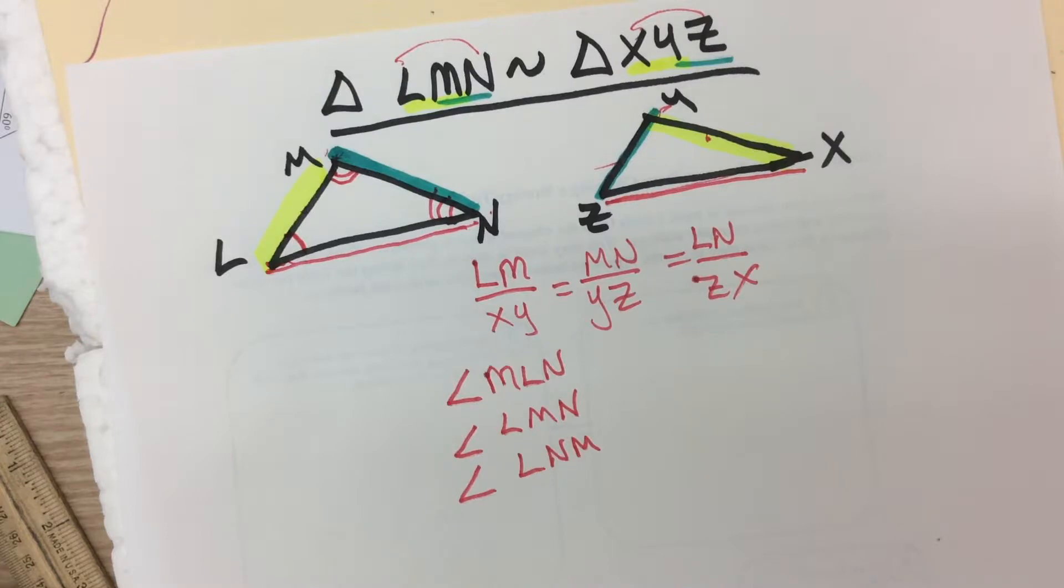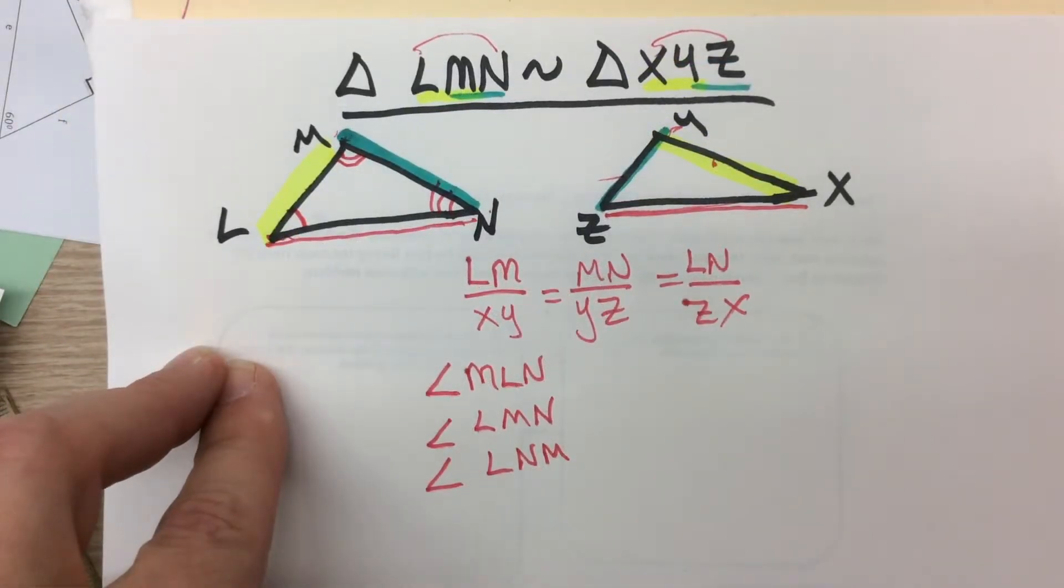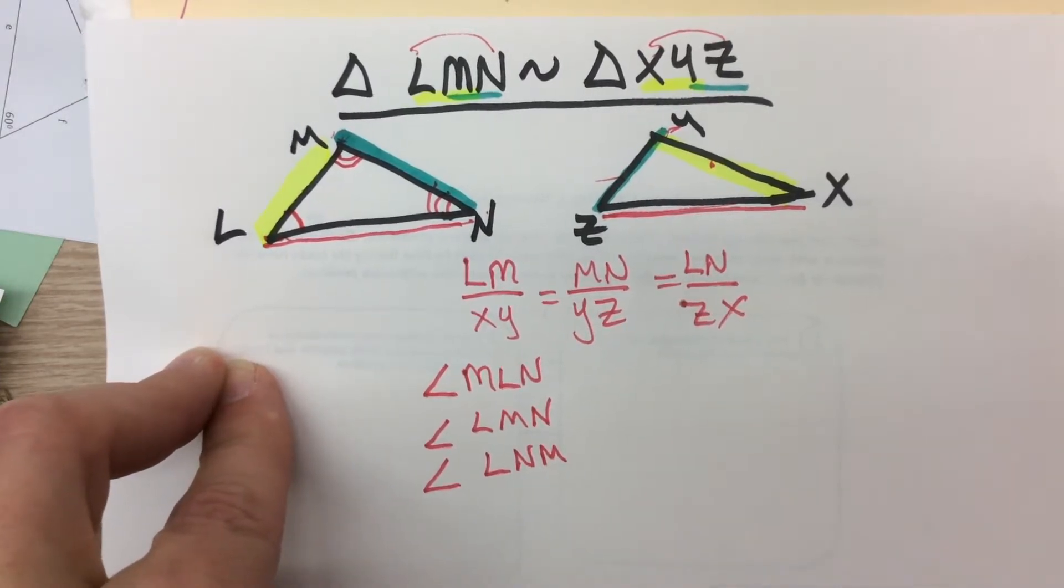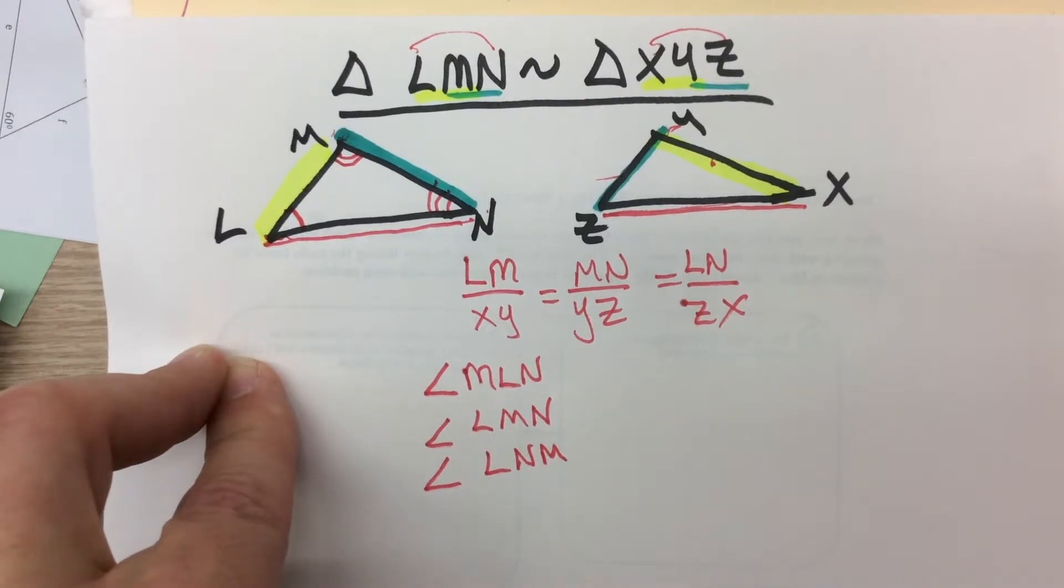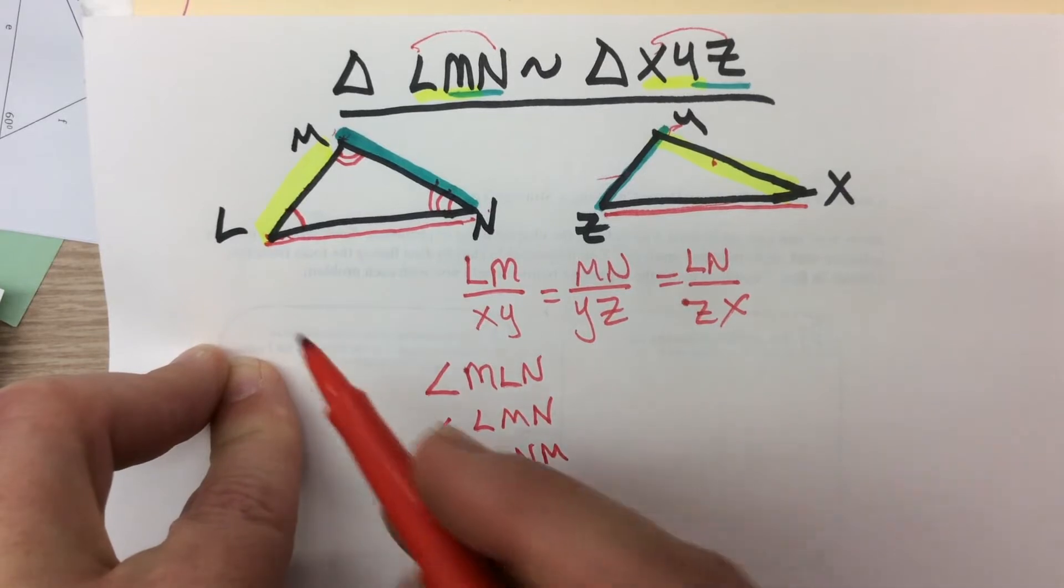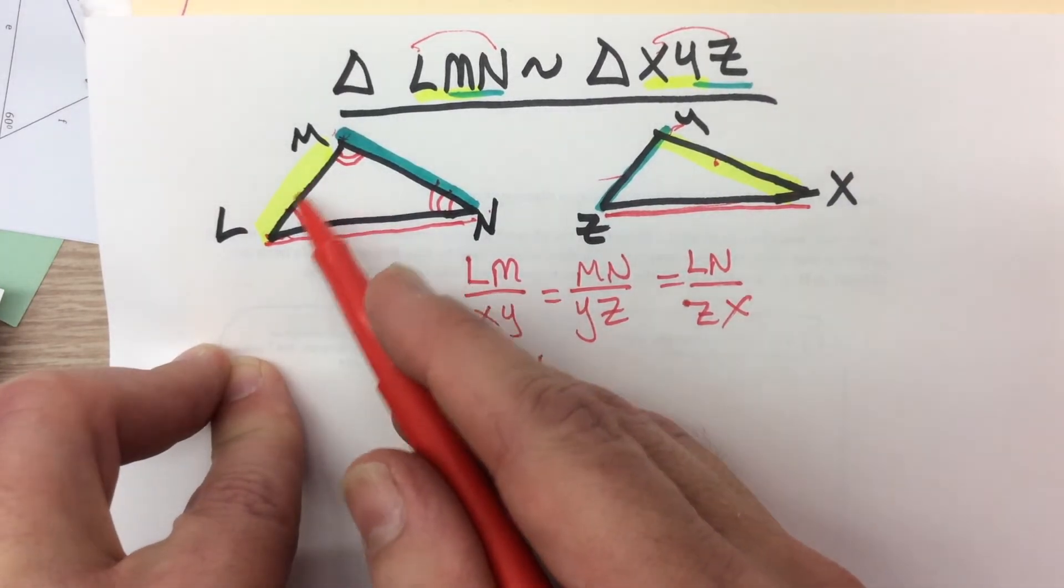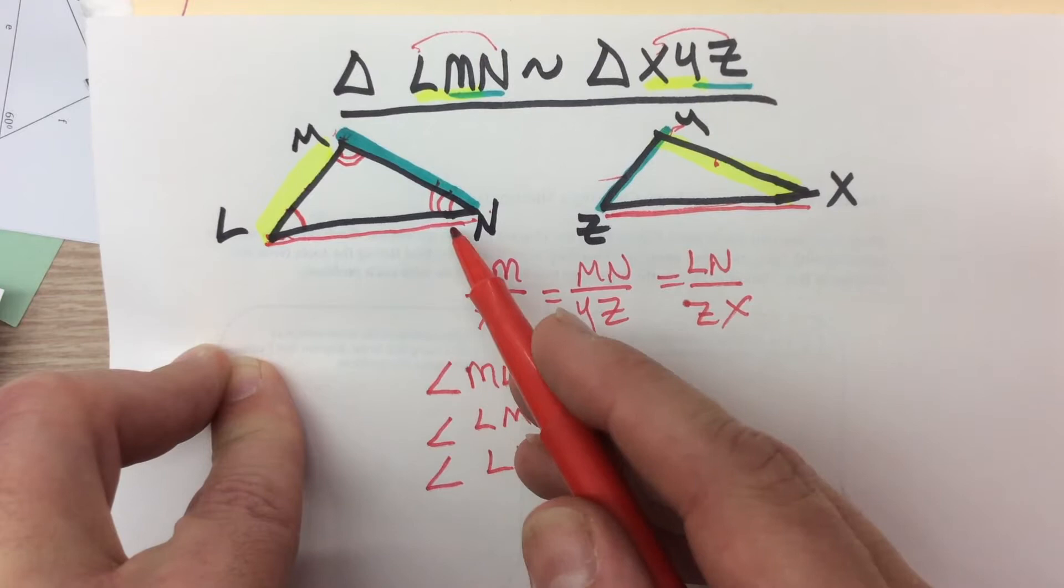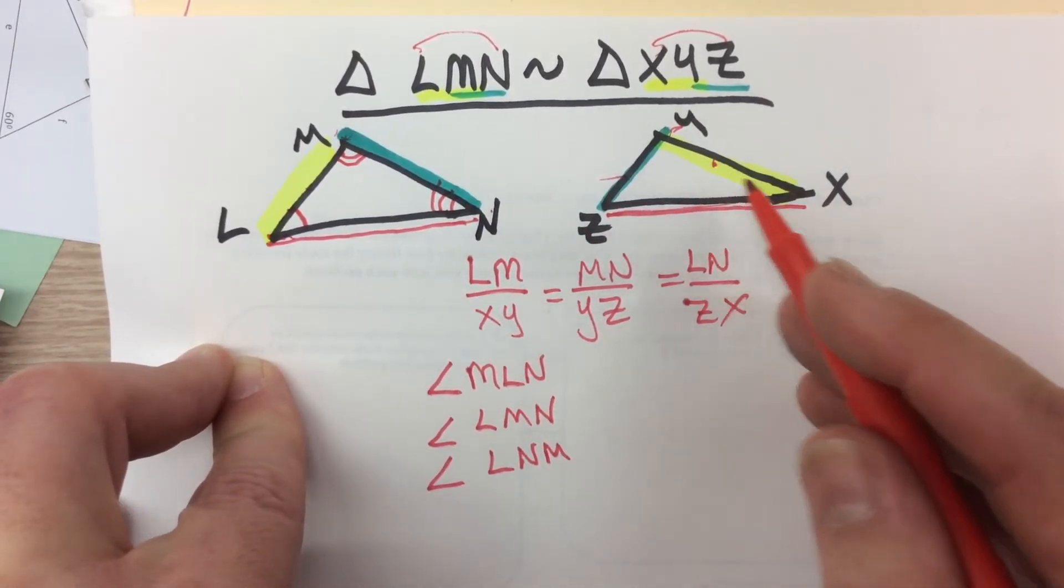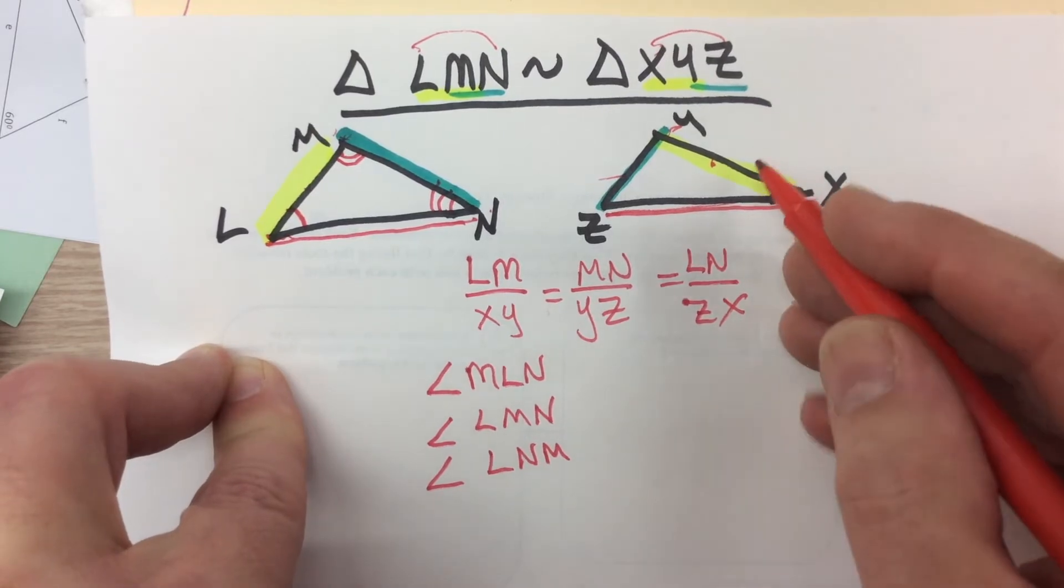So the angle that has a vertex at L corresponds to the angle that has the vertex at X. Another way to think about it: take a look. LM and XY correspond. LN and ZX correspond. So the place where those two corresponding sides meet to form an angle ought to be the corresponding angles. And they are.